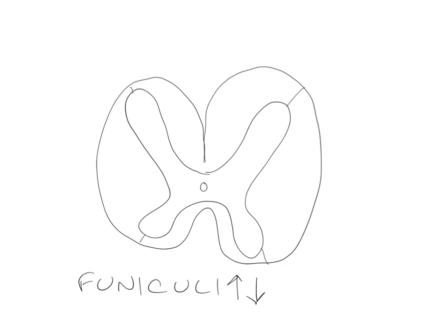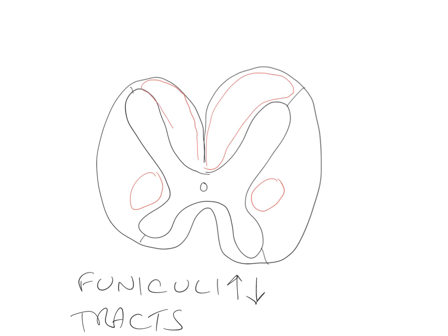Within each funiculus we find tracts. Those different pathways within the funiculi, which might be afferent or efferent, we term tracts, and the tracts live in discrete places. For example, we have our lateral corticospinal tracts living in the lateral funiculi, our dorsal column tracts living in the dorsal funiculus, and our ventral corticospinal tracts living in the ventral funiculus.